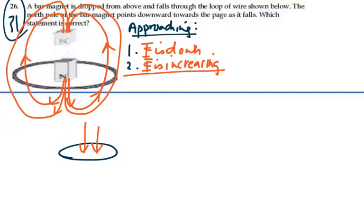What's nature going to do about this? Well, if we have a flux that's going down and it's increasing, the response is to create a magnetic field, an induced magnetic field that is up to oppose the increase in flux going down.